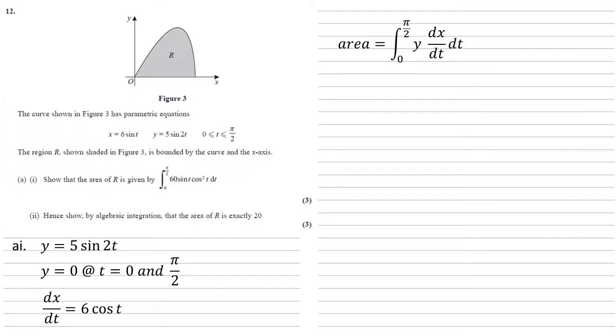Putting our y and dx by dt in, we get the integral of 5 sine 2t times 6 cos t. Now looking at what we're aiming for, there's no 2t in there, so we're going to use the double angle formula on sine 2t to give 5 times 2 sine t cos t times 6 cos t. Bringing all this together gives us the integral between 0 and pi over 2, 60 sine t cos squared t dt, as required.